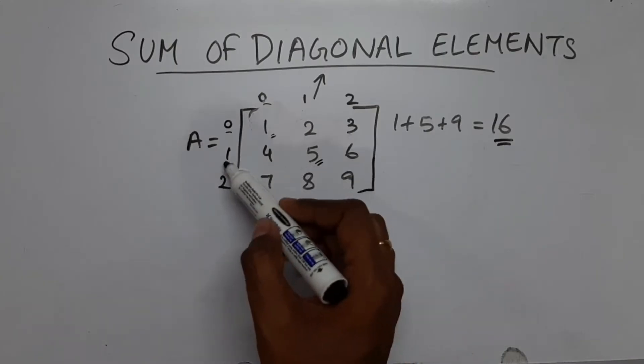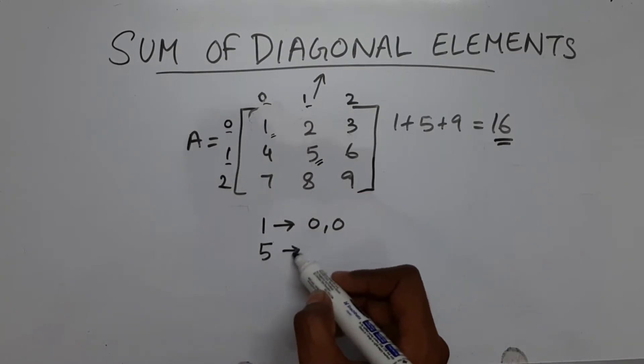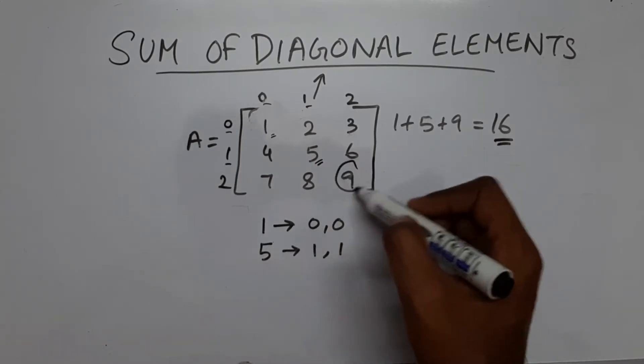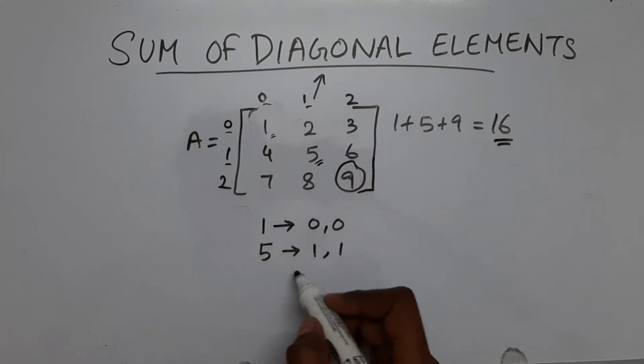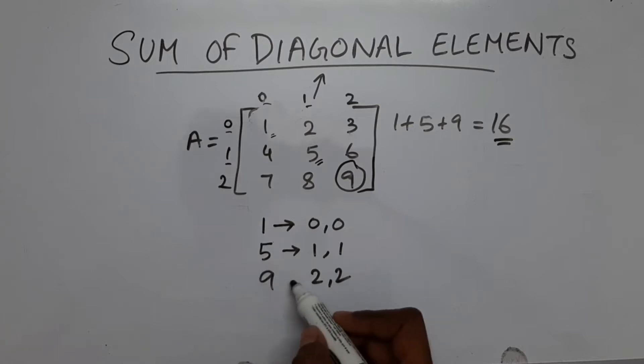So what is the row and what is the column? We will say 5 is present at row number 1 and column number 1. What about this 9? So the row is 2 and column is also 2 for the value 9.